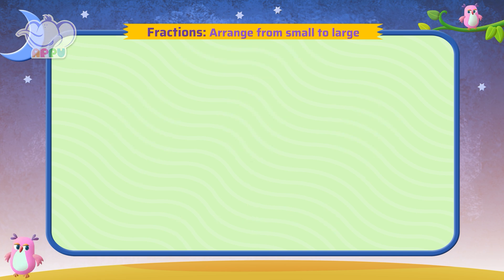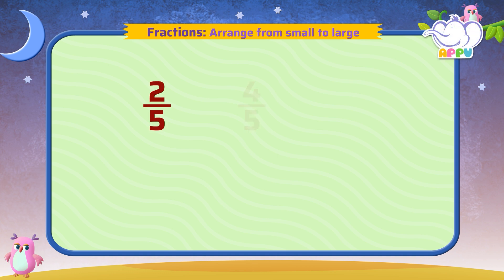Arrange these fractions from smallest to largest: 2 by 5, 4 by 5, 3 by 5.